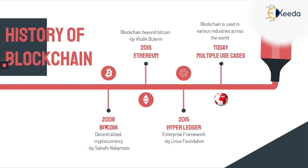I wouldn't say blockchain is a new technology that got introduced by Bitcoin in 2008. Even before Bitcoin was introduced, there were similar technologies being worked upon by scientists. Some notable work happened in 1991 by Stuart Haber and Stornetta, who created a concept of cryptographically chained blocks — sounds very similar to blockchain. Then in 1992 came something called Merkle trees, which I would say is also a parent to the current blockchain that we have.